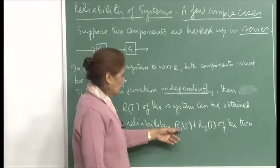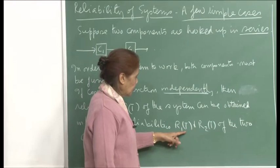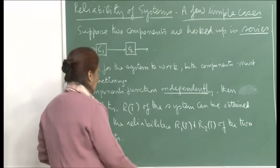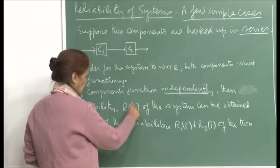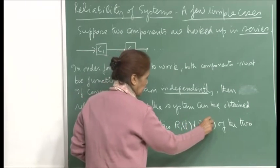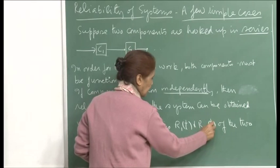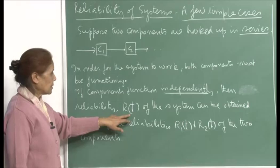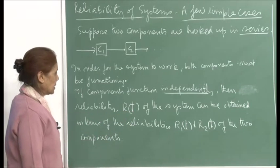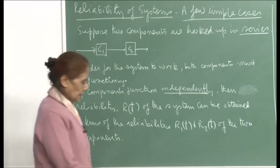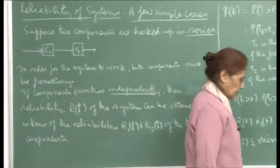Denoting the reliability of the first component by r1(t) and the reliability of the second component by r2(t), we can compute the reliability of the system in terms of r1(t) and r2(t). This is a simple computation we have already done many times.